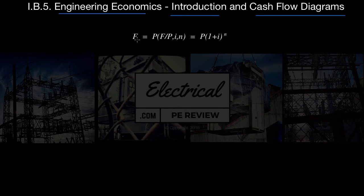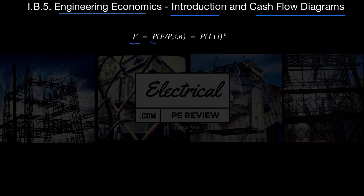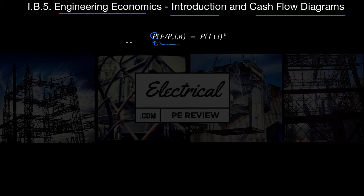First things first, on your screen I'm going to pick on this one formula just to give an example. This is find a future worth F if you're given a present worth value. A lot of times you're going to see these formulas referenced like this: F given P for an interest of I over time period of N, N standing for the compounding periods. This ratio is what you multiply by the present value to get your F, and all of these equations follow the same format.